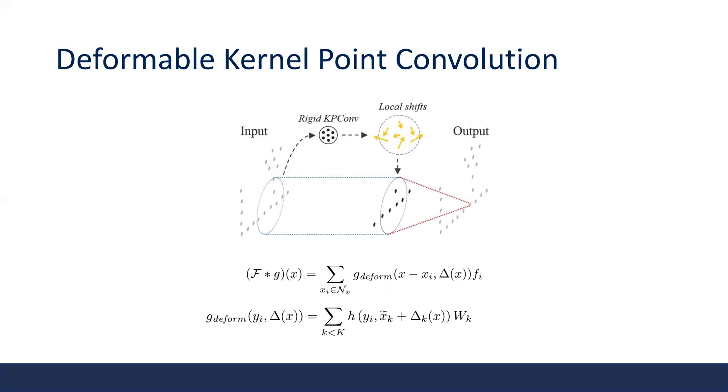The kernel points can be predefined like in the previous figure, but we can also learn the positions of these kernel points following the idea of deformable 2D convolution. The basic idea is to add a learnable pointwise offset to each kernel point, and because all operators here are differentiable, the kernel itself can learn to adapt its local shape to different input data.